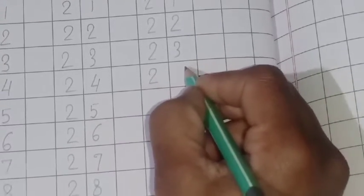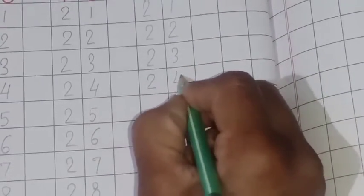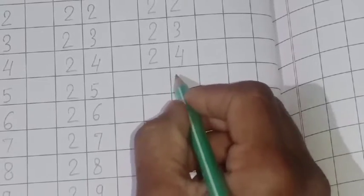Next spelling 24. T-W-E-N-T-Y, twenty. F-O-U-R, four. Okay.